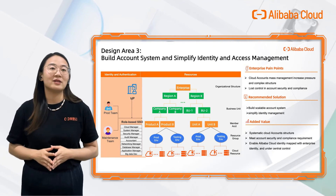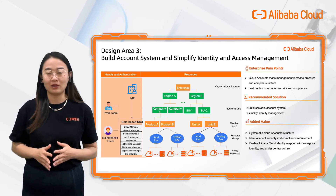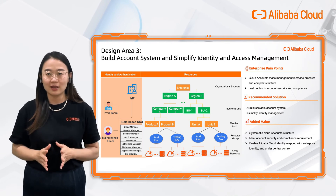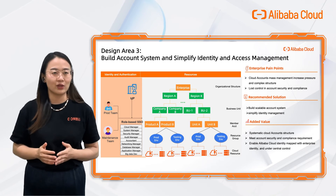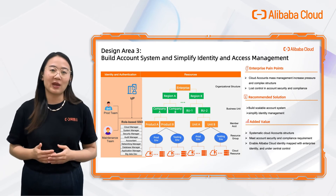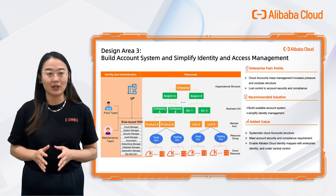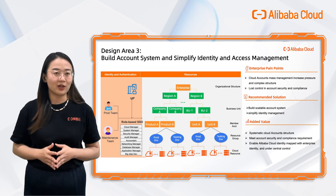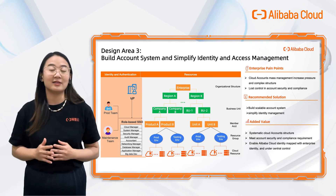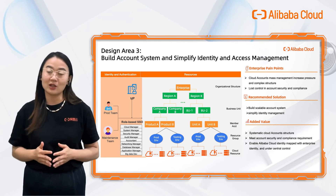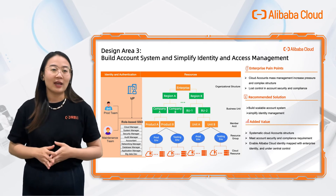The next design area is about identity and access control. Due to managing multiple cloud accounts at scale, it increases pressure and complexity for any enterprise, making it easy to lose control over access security. While expanding to a scalable account system, we also need to simplify identity management. A best practice is for an organization to map groups of users to roles to simplify identity types, such as production role, maintenance role, finance role, database role, and so on.